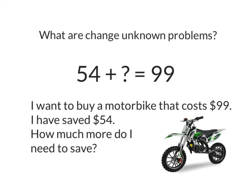Here's an example of a change-unknown problem. I want to buy a motorbike that costs $99 — that's my end answer, $99. I have saved $54. How much more do I need to save? So that will be my change-unknown. I have $54 and I need to get to $99. How much more do I need?